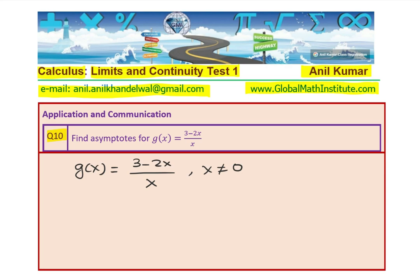Now, x is not a common factor, so x will give you a vertical asymptote. The vertical asymptote is at x equal to 0.